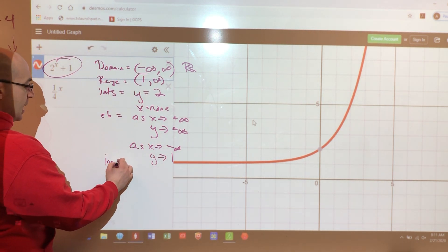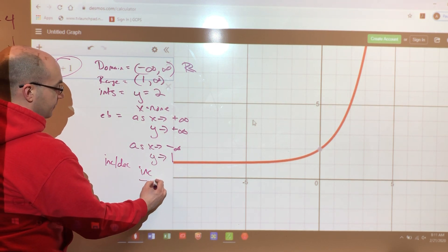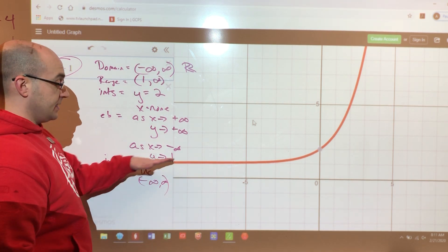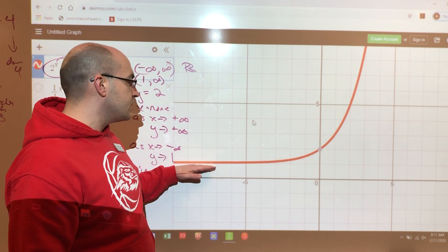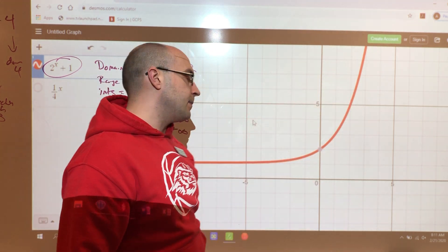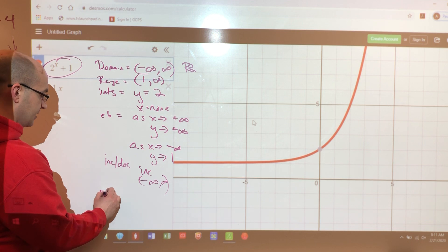Increase, decrease is easy. The function is increasing forever, which means negative infinity to positive infinity because it's increasing forever. Even though it doesn't look like it's increasing here, it is increasing. Very, very small amounts of increase. And then it goes way up.